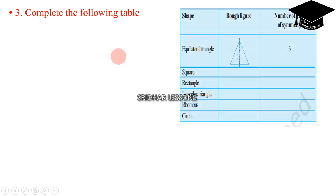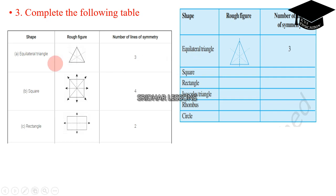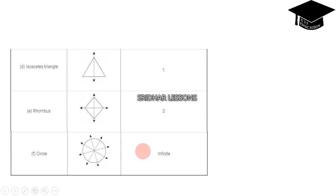Question number three: complete the following table — shape, rough figure, and number of lines of symmetry. For an equilateral triangle, the number of lines of symmetry are three. For a square, there are four lines of symmetry. For a rectangle, we have only two lines. For an isosceles triangle, we have only one line. For a rhombus, we have two lines. For a circle, we may have an infinite number of lines of symmetry.